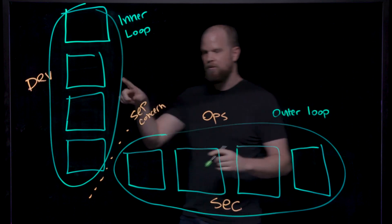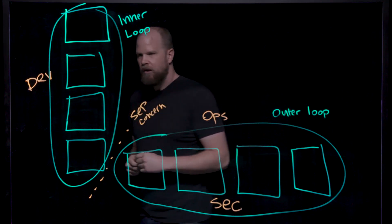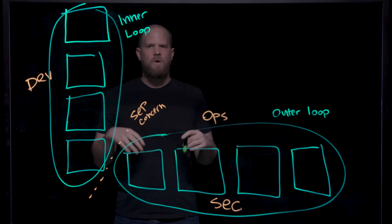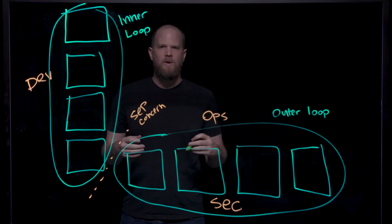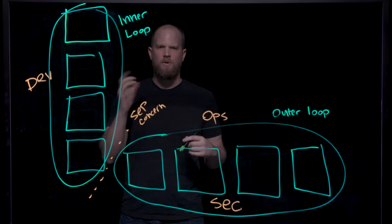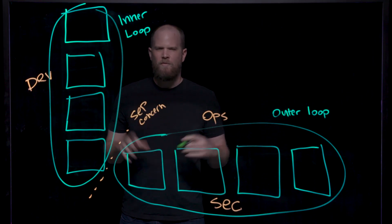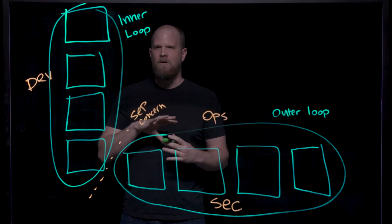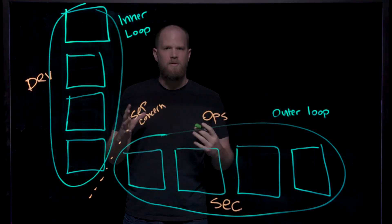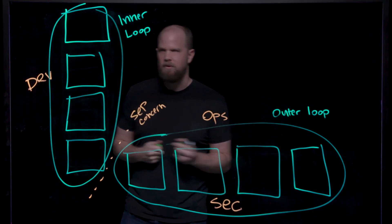Let's talk about the inner loop first. The inner loop is all about quick feedback and quick iteration when a developer is developing their application in their local environment. There are four key outcomes that we want to focus on for TAP for the inner loop for developers.